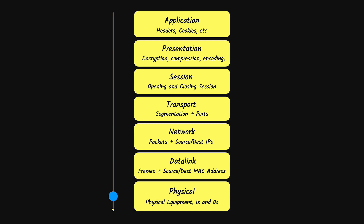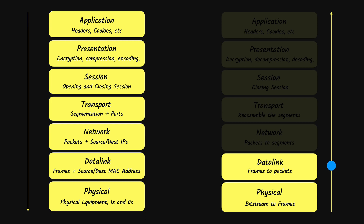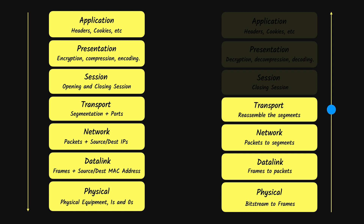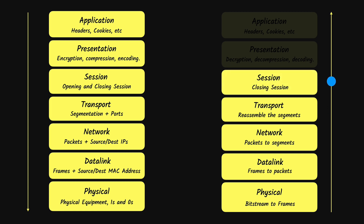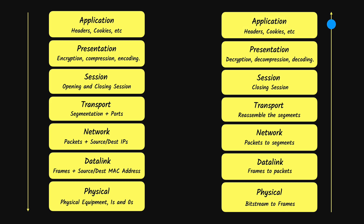The data then passes to the receiver's end, entering from the physical layer, where the bit stream of ones and zeros is converted back to frames and passed to the data link layer, which converts frames into packets for the network layer. The network layer converts packets into segments for the transport layer, which reassembles them into a single data piece for the session layer. The session layer closes the session if needed, passes data to the presentation layer to decompress and decrypt it, and finally the application layer feeds the data into the application to be shown to the user.